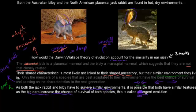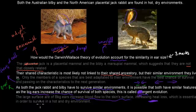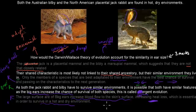The last thing I wrote is: the large surface area of big ears increases blood flow to the skin surface, increasing heat loss, which is essential in order to survive in a hot and dry environment. This last part might not have been required — I included it just in case. But what I should have definitely mentioned is that the adaptation helps with heat loss, and that being able to lose more heat is a beneficial adaptation to survive in hot and dry environments.